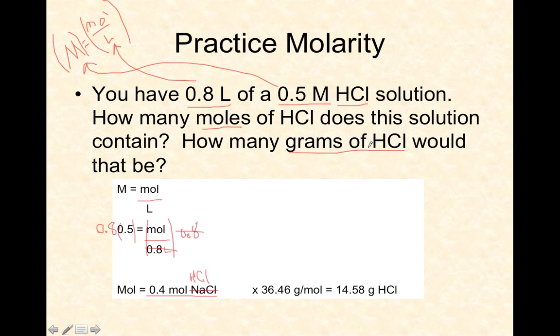That's your moles, 0.4 moles of hydrochloric acid. Now it asks for grams, so we got to go to our periodic table again. We have moles, we have to get to grams. You go to your periodic table and you find that hydrogen weighs 1.01 grams per mole and chlorine weighs I think 35.45. We add up our hydrogen, we add up our chlorine, and we get 36.46.